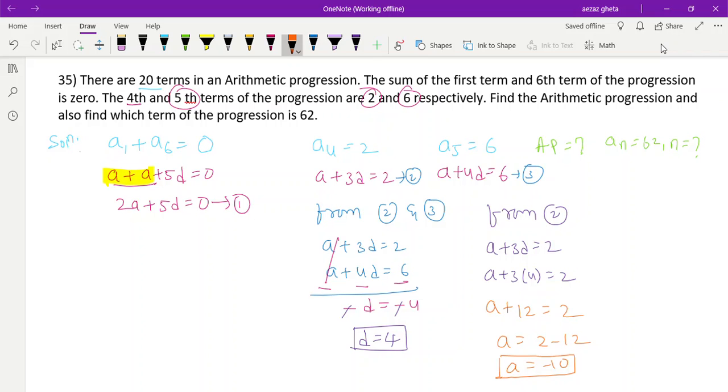Now we have to find the AP. The AP is a, a plus d, a plus 2d, and so on. So it's minus 10, minus 10 plus 4 equals minus 6, minus 10 plus 8 equals minus 2. This is your AP: minus 10, minus 6, minus 2... Done.